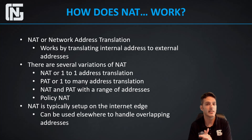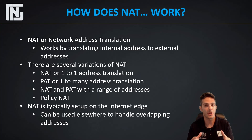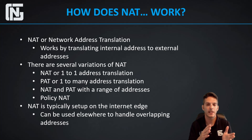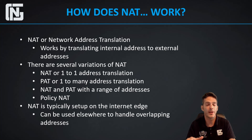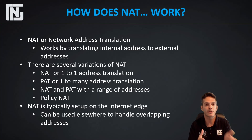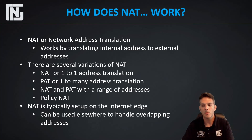NAT is typically deployed at the internet edge, but it does not necessarily have to be there. It can be deployed pretty much anywhere you need to translate traffic — where you have overlapping addresses or address translation is necessary in the network. It doesn't have to be at the internet edge; it can be anywhere in the network where translation is needed.